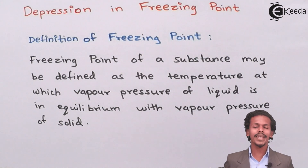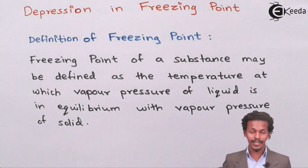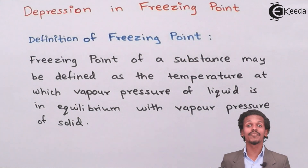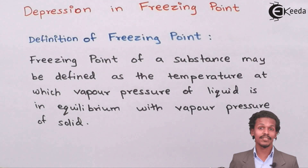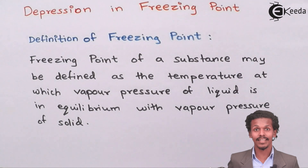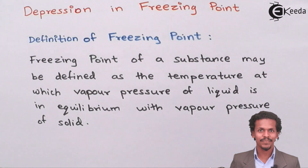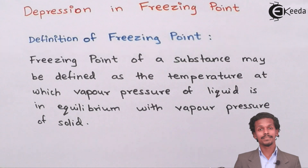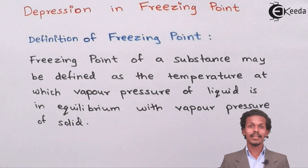For example, a very common example you already know: water, which is present in liquid state at ordinary temperature, when cooled to zero degrees Celsius, starts freezing. It converts into ice, and ice present at zero degrees Celsius or below is a solid. Hence, freezing point is the temperature where a liquid is converted into a solid.